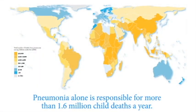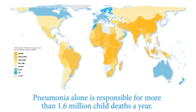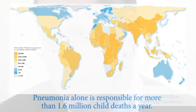But in children particularly — children under five — this is the group of illnesses that are the leading cause of death, and as many as two million children each year die in the world from acute respiratory infections, and many of these deaths are preventable and treatable.